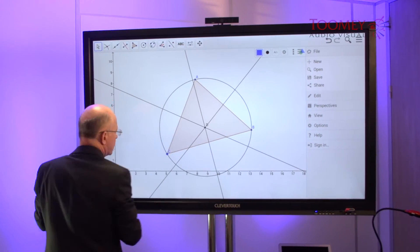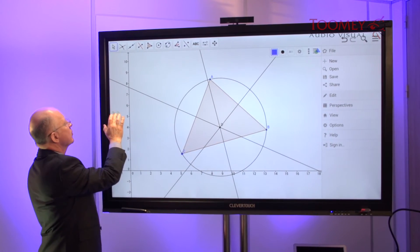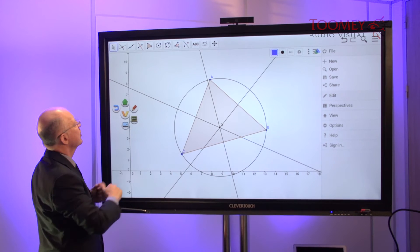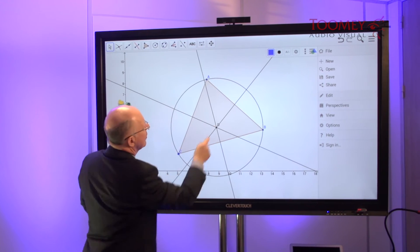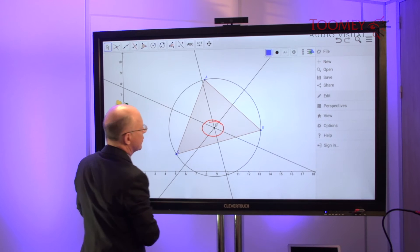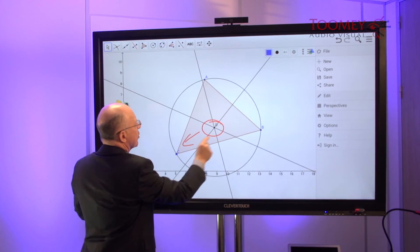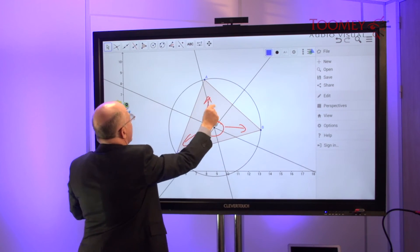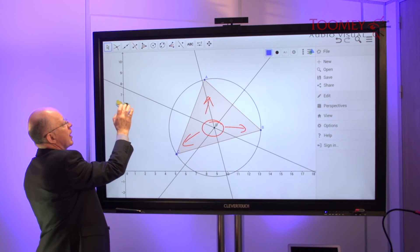Working on the Clever Touch, we can also call up our annotation widget. Let's have a look at the location of that center in relation to the triangle itself, and we have the option of capturing that.